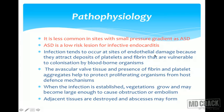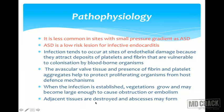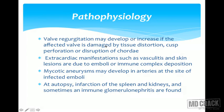Infection tends to occur at sites of endothelial damage because they attract deposits of platelets and fibrin that are vulnerable to colonization by bloodborne organisms. The avascular valve tissue and presence of fibrin and platelet aggregates help protect proliferating organisms from host defense mechanisms. When infection is established, vegetations grow and may cause obstruction or embolism. Adhesion tissues are destroyed and abscesses may form. Valve regurgitation may develop or increase if the affected valve is damaged.